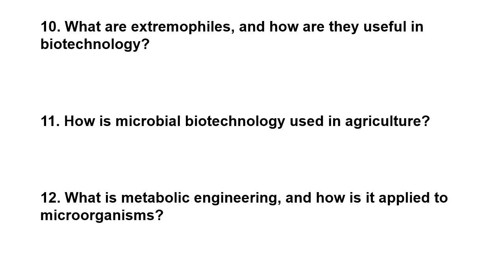How is microbial biotechnology used in agriculture? In agriculture, beneficial microbes are used for improving soil fertility, enhancing crop growth, and controlling plant diseases. For example, nitrogen-fixing bacteria like Rhizobium are used to boost soil nitrogen levels. Biopesticides derived from bacteria like Bacillus thuringiensis — as in Bt brinjal and Bt cotton — are used to help control pests without the use of harmful chemicals, and these fall under microbial biotechnology.